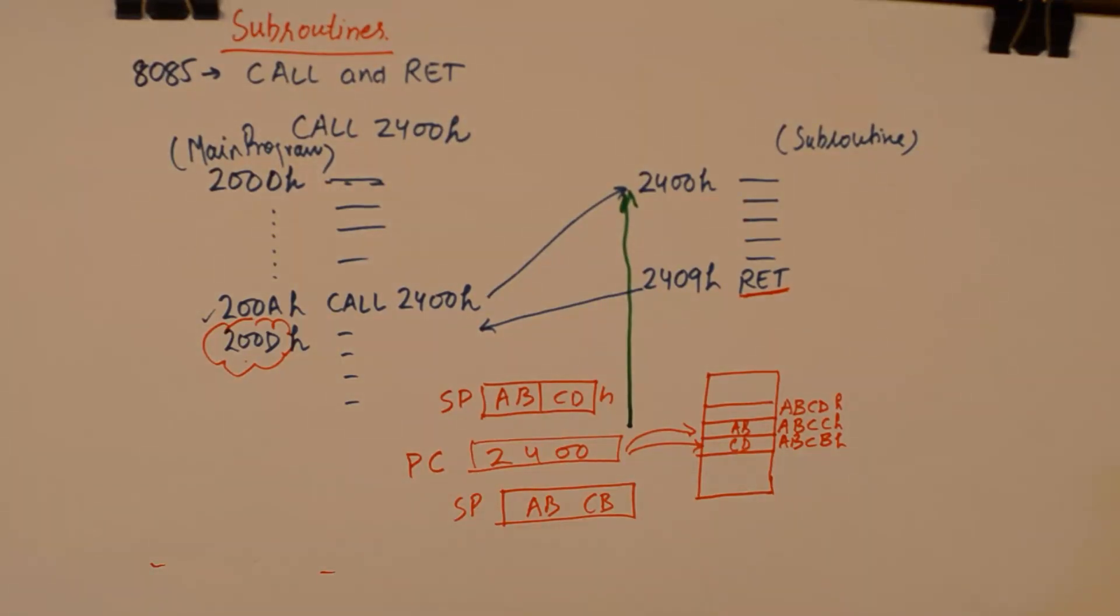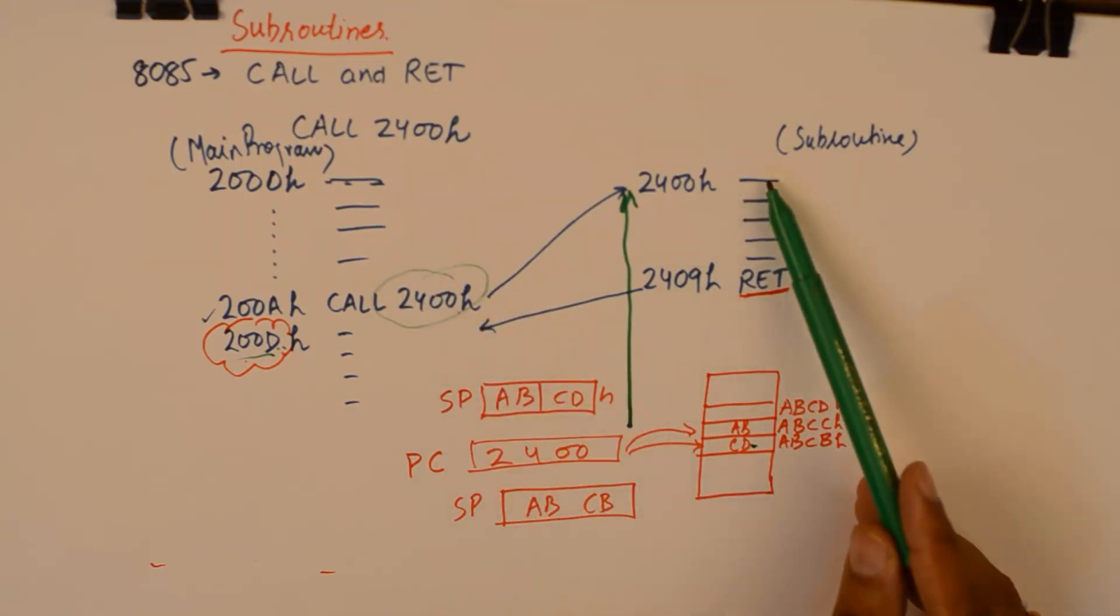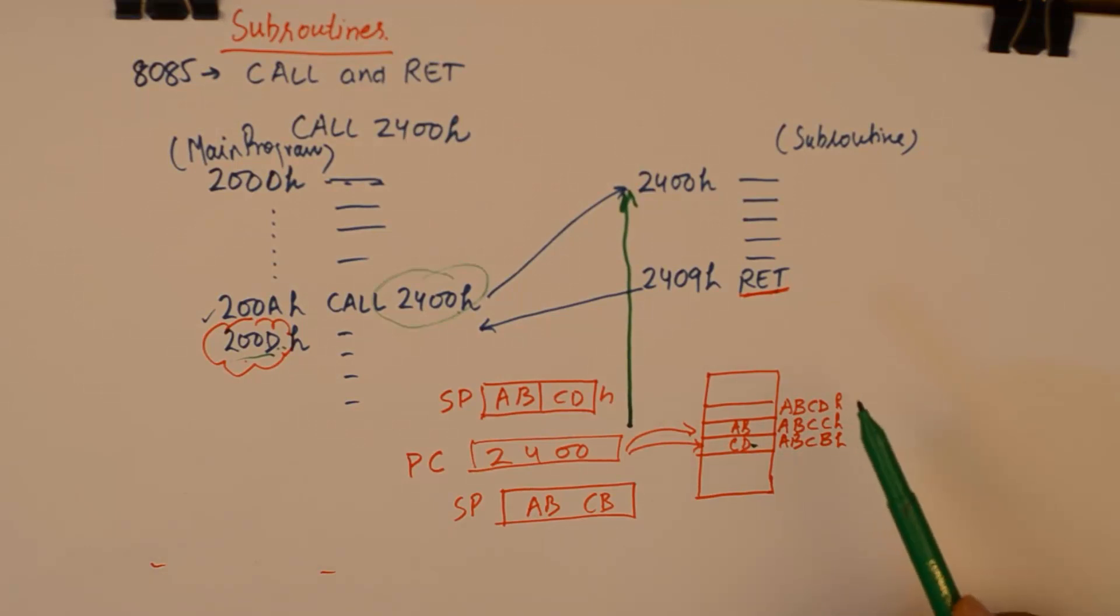Now please understand the steps again. Step number one, we calculate the immediate next address after the call instruction. So the immediate next address is 200D. Because call is a three byte instruction, you can easily calculate the next instruction's location. So you need to safely store this to stack. And then you need to move the address to program counter so that it goes to subroutine. And once subroutine is executed, then return is executed automatically.